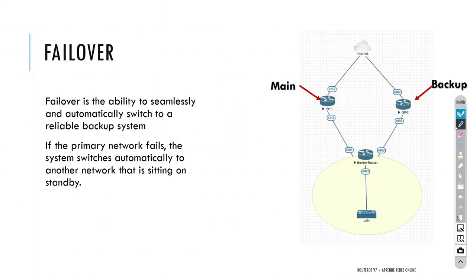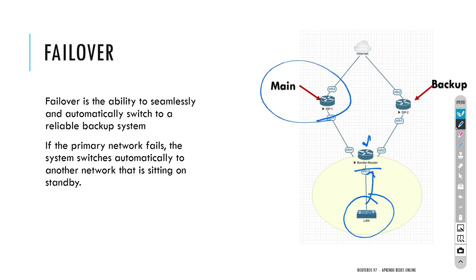What exactly do I mean by failover? We see this network diagram on your screen. We have a local area network connected to a border router. Inside that yellow circle we can have any topology, any amount of routers, switches, or firewalls, but the idea is that at some point we have a border router. In that router we have two internet service providers — one is going to have a higher priority and the second one is the backup connection with a lower priority.